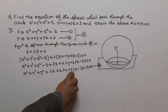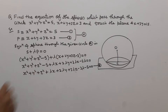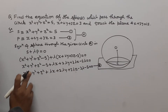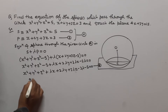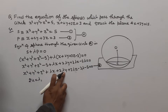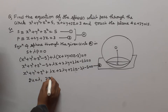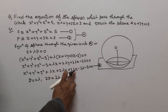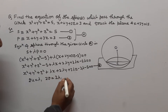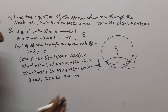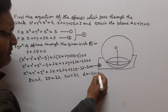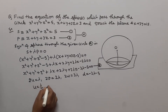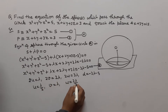This is the equation of a sphere passing through the given circle. Now we find the center by comparing with the general equation of a sphere. The coefficient of x is λ = 2U, so U = λ/2. The coefficient of y is 2λ = 2V, so V = λ. The coefficient of z is 3λ = 2W, so W = 3λ/2. The constant term gives D = −3λ − 5.